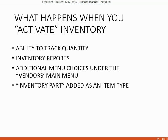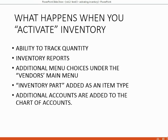After you activate inventory, one of the item types that will then be available to you will be called Inventory Part. That's an additional item type added to the item type list when you enter your inventory items. QuickBooks will also automatically add additional accounts in the chart of accounts specifically to track the money when you buy and sell merchandise.